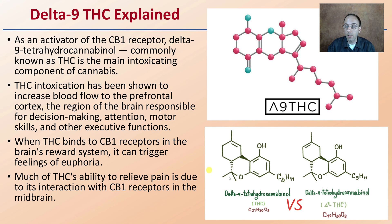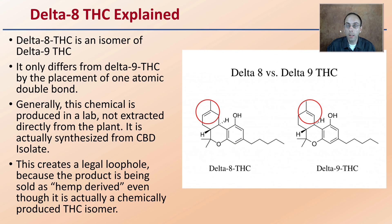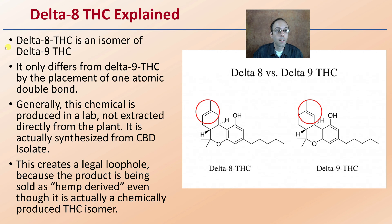Now we're going to talk about Delta-8 THC. Here's a little comparison of the structures. At first glance they look almost identical, but the key part is the double bond here and the double bond here. That's the difference between Delta-9 and Delta-8 — where that double bond is located. That switch of a double bond also creates some differences in how these molecules interact. Delta-8 is an isomer of Delta-9 THC, and it's a changing of where that double bond is located.